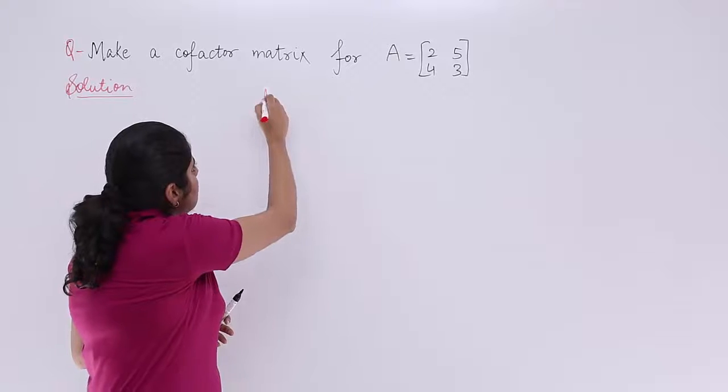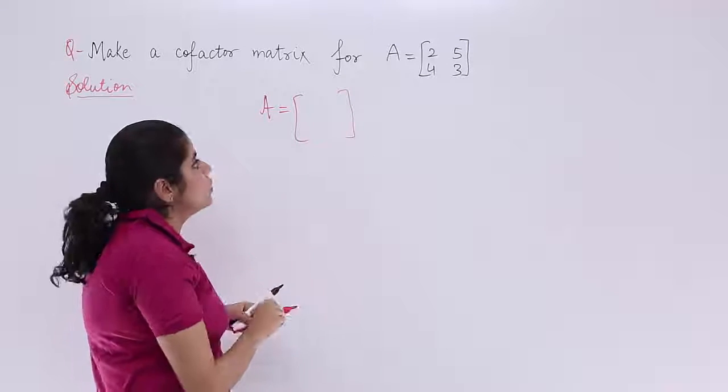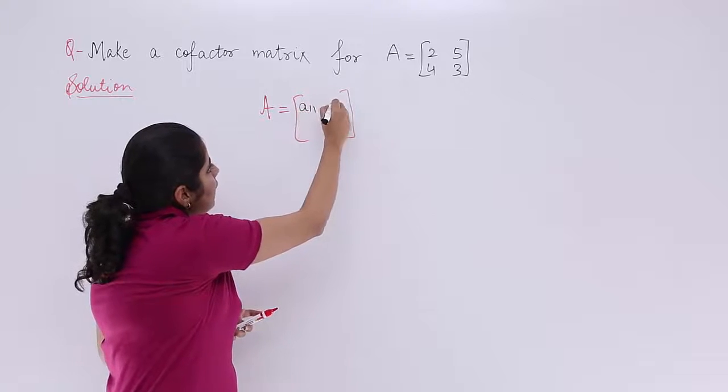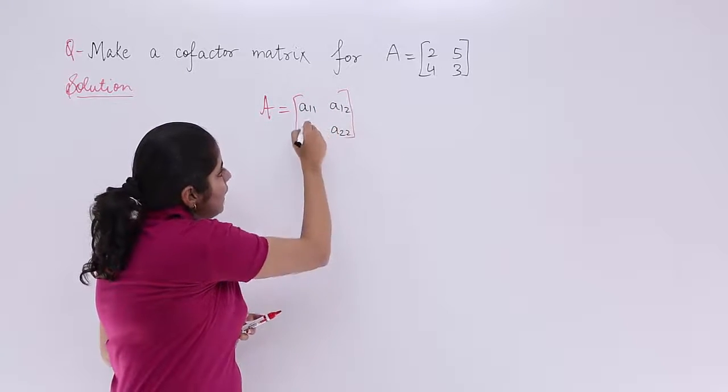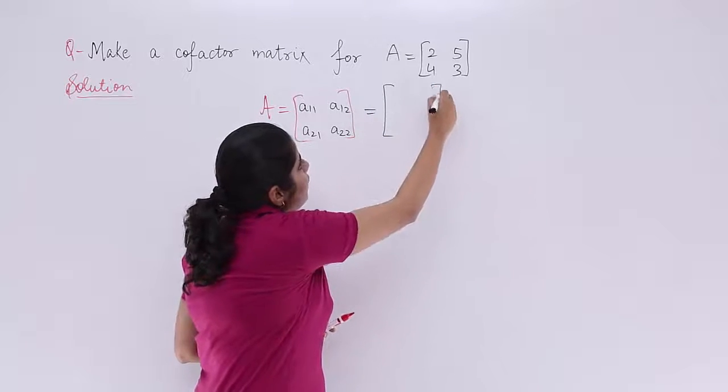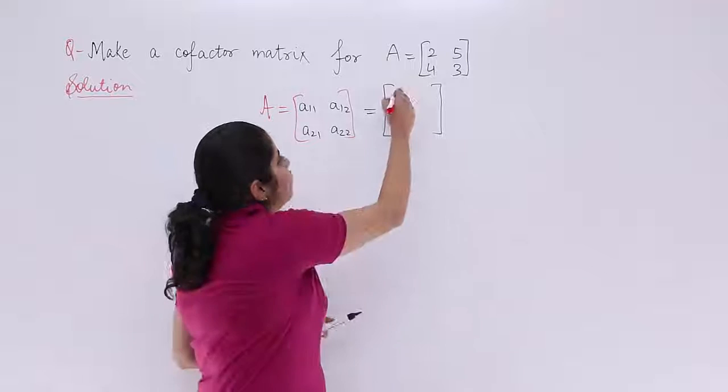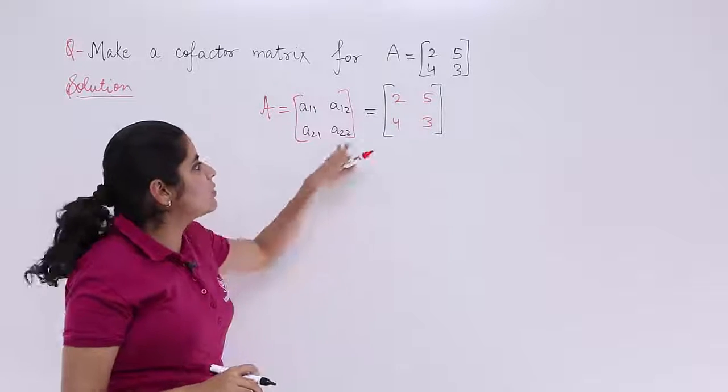So firstly, let's modify this question a bit. I need to write A11, A12, A21, A22 for better understanding. And this matrix is basically equal to this matrix 2, 5, 4, 3. So it is 2, 5, 4, 3. These two matrices are equal.